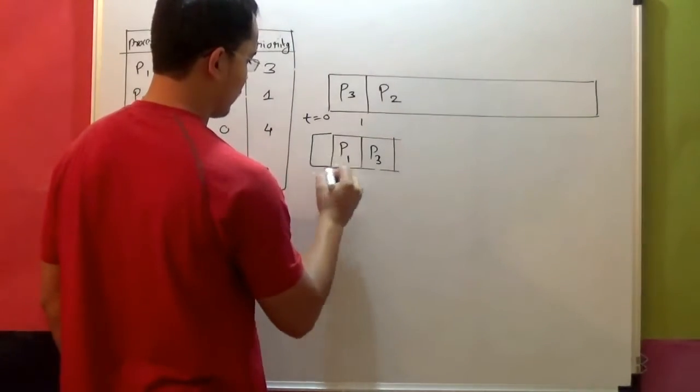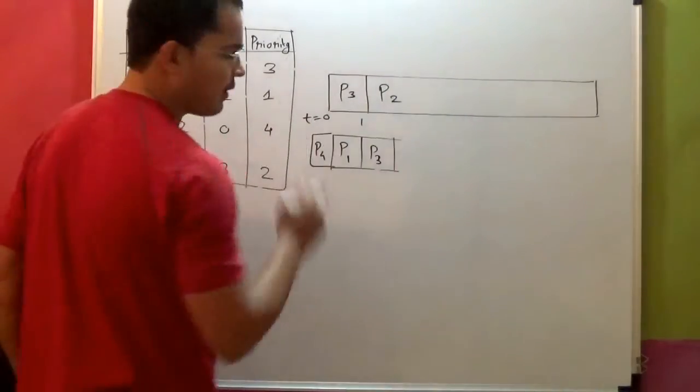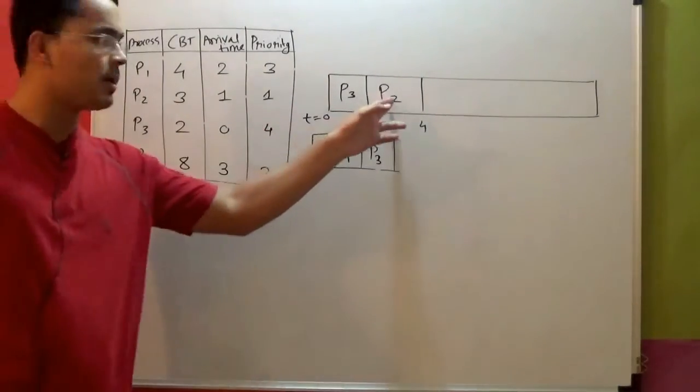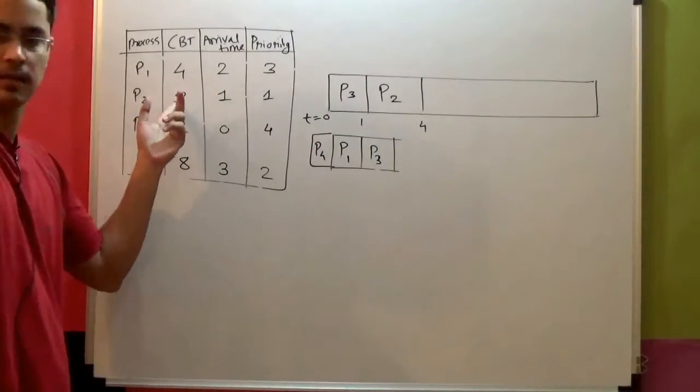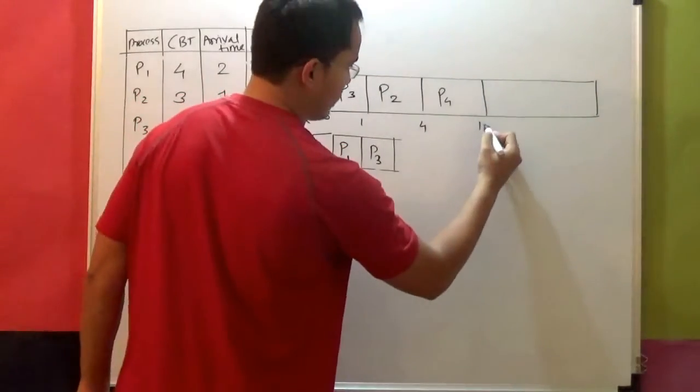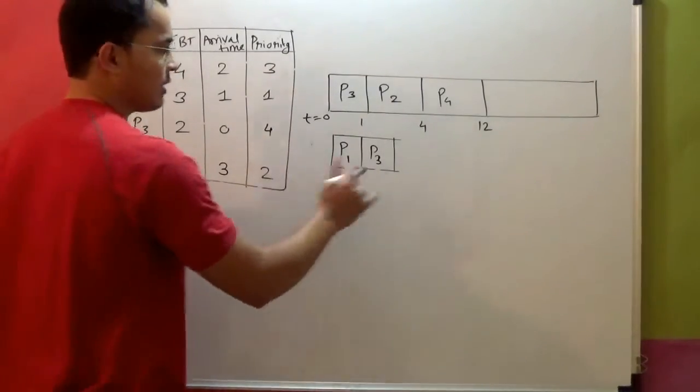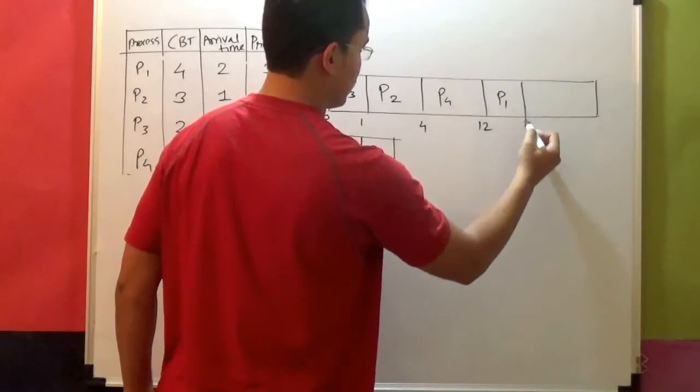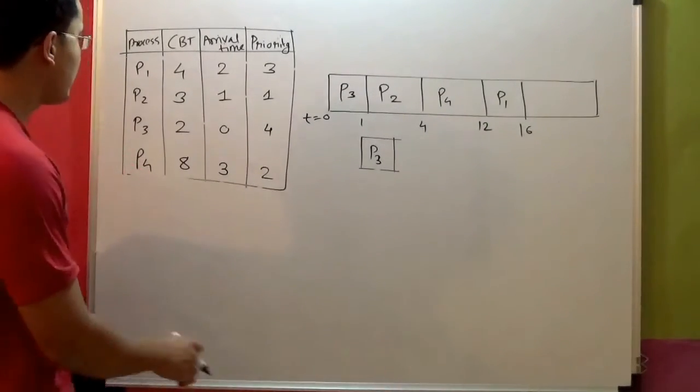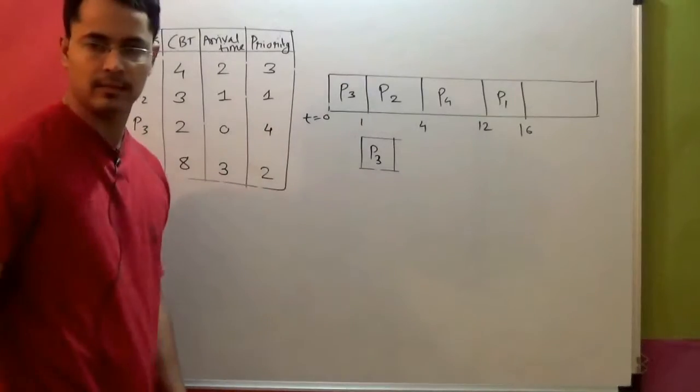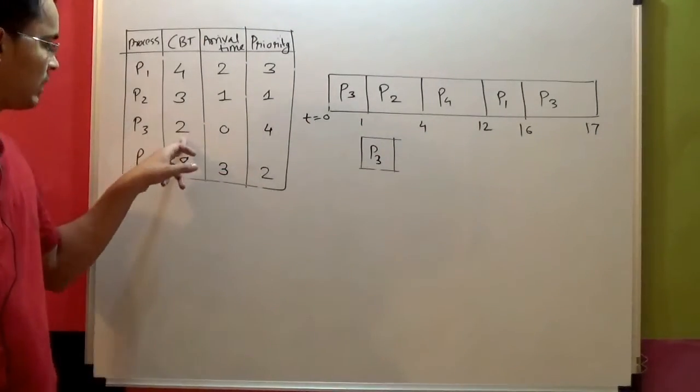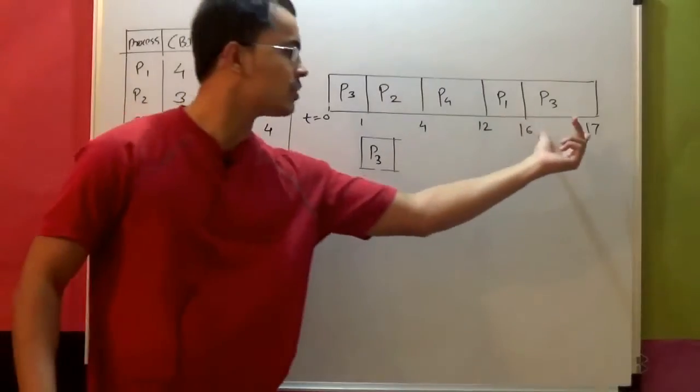Now P2 will finish at some time. So P2 requires 3, so at time equal to 4, P2 will finish. P2 began at time equal to 1, P2 requires 3, so at 4 P2 will finish. At that time P4 will start. How much P4 requires? 8. So at 12, P4 will finish. After which P1 will start. P1 requires how much? 4. So at 16, P1 will be finished. Then who is remaining? P3. P3 requires 2, out of which 1 has already been done before P2 preempted it. So P3's remaining portion, that is 1, will be completed at the end. So this is our final Gantt chart.